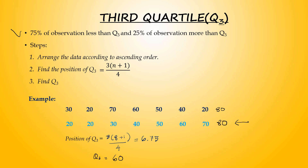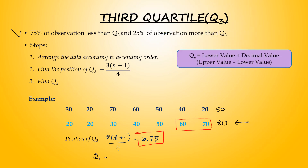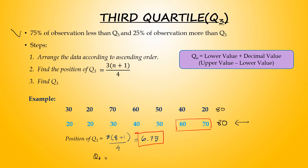How to find Q3 based on position 6.75? It is in between 60 and 70. Using the interpolation formula: Q3 equals the lower value 60, plus the decimal 0.75, times the upper value 70 minus lower value 60. So Q3 equals 67.5.